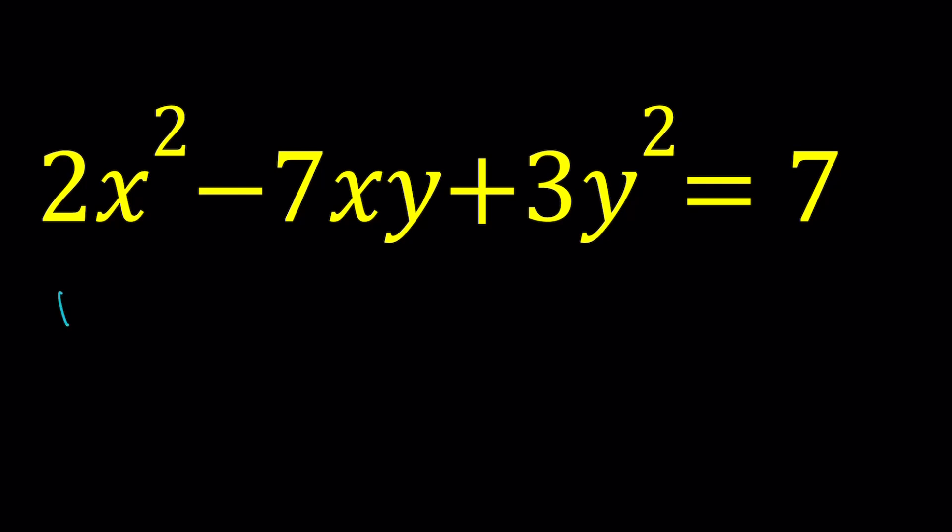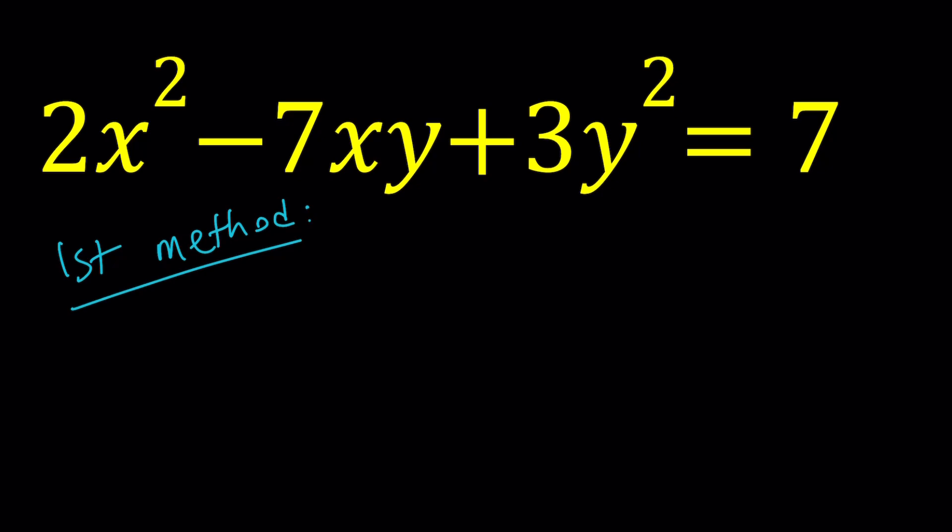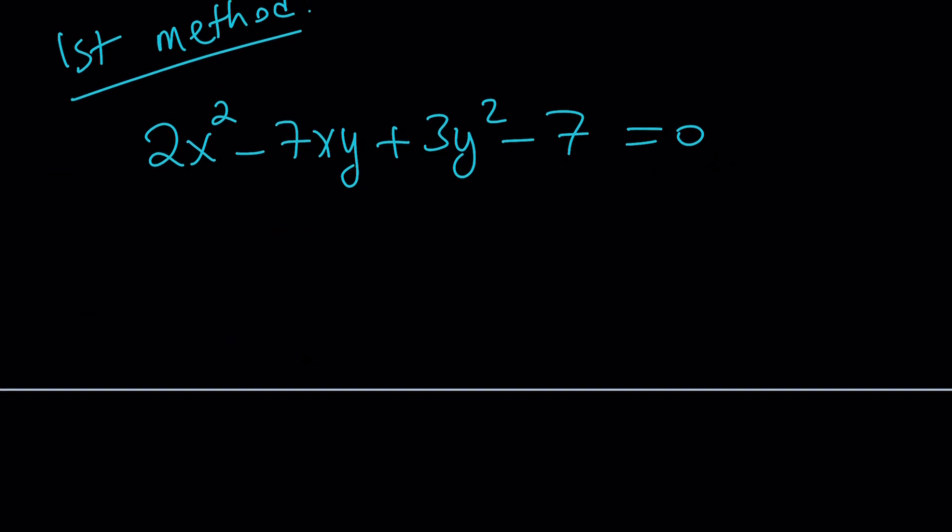Let's start with the first method. For my first method, I'm going to turn this into a full quadratic and then use the quadratic formula. Obviously, there are two variables, so we kind of have to work with them. Let's go ahead and put everything on the same side. And then we're going to treat this as a quadratic. We can do it in two ways, either as a quadratic in y or as a quadratic in x. But this time, since I have my first term as 2x², I'm going to treat it as a quadratic in x. So we can kind of write it this way, which makes a little bit more sense, so you can see the coefficients better.